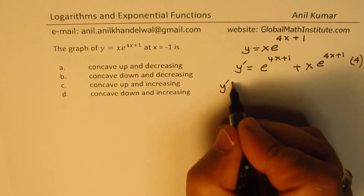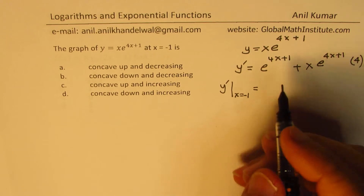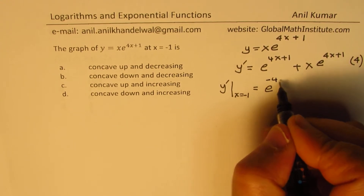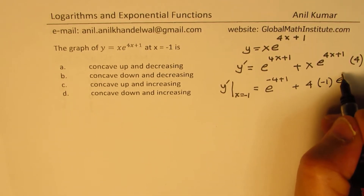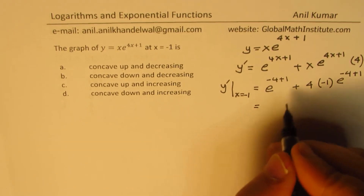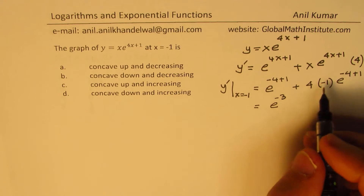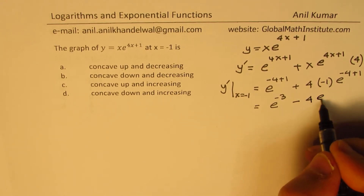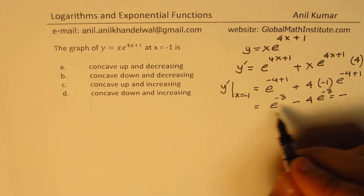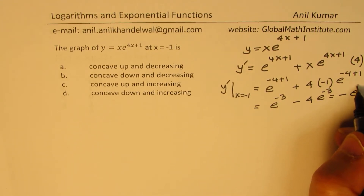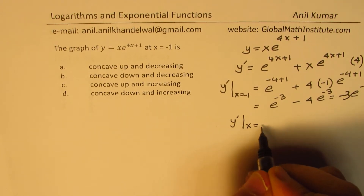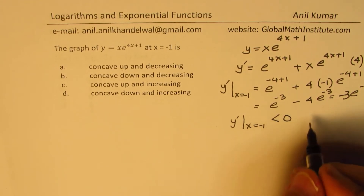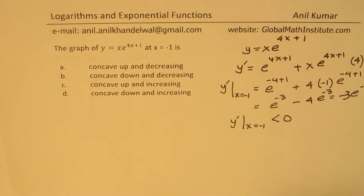The derivative at x equals minus 1: substituting, we get e to the power of minus 4 plus 1, plus 4 times (x is minus 1) e to the power of minus 4 plus 1. That gives e to the power of minus 3, minus 4·e to the power of minus 3, which is negative. So the first derivative at x equals minus 1 is less than 0, clearly indicating the graph is decreasing.